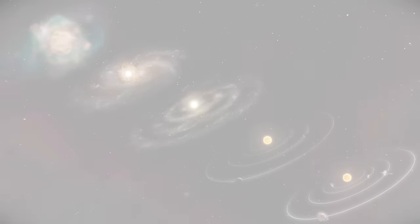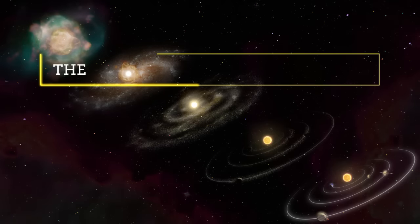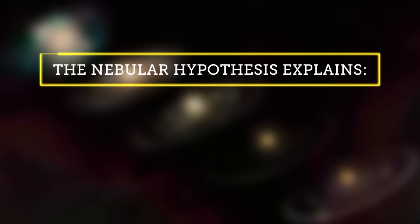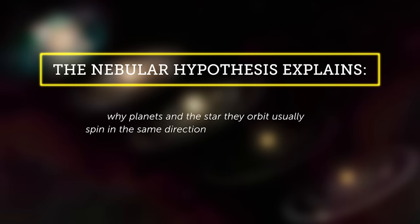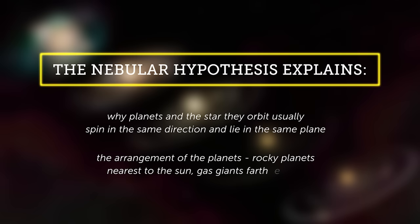Although the nebular hypothesis cannot be directly tested, it is a useful description for how a solar system forms. It explains why planets and the star they orbit usually spin in the same direction and lie in the same plane. It also explains the arrangement of the planets, with the rocky planets nearest to the Sun and the gas giants farther away.